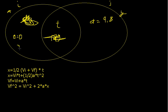In x, since there's no acceleration, the initial velocity equals the final velocity — it's not changing speed. Maybe they'll give you that, maybe they won't, but this counts as two variables even though it's kind of only one. By plugging those in as the same thing, you get the initial velocity times time equals the distance traveled in the x direction.